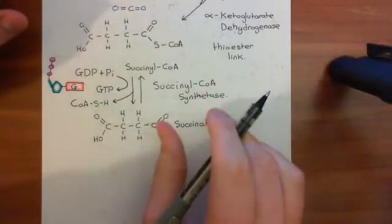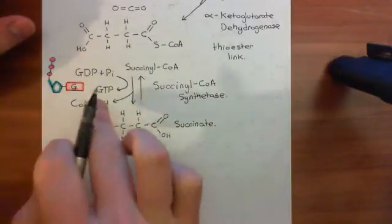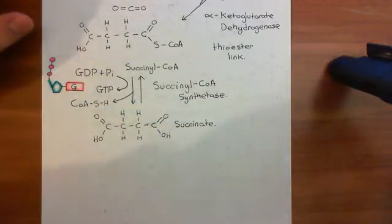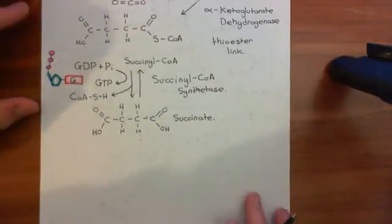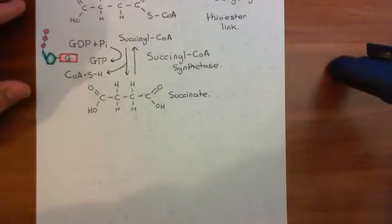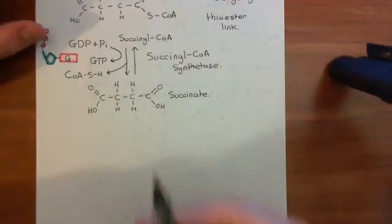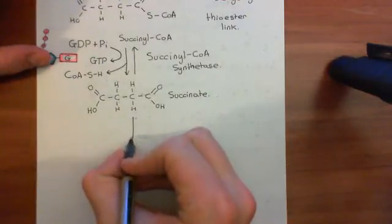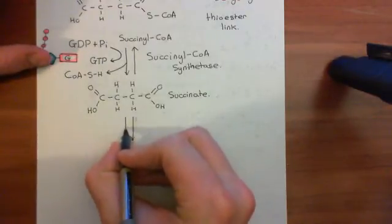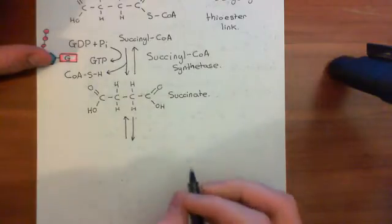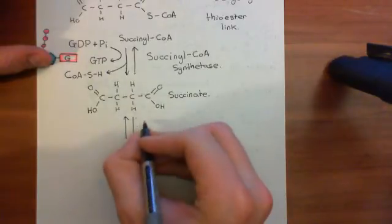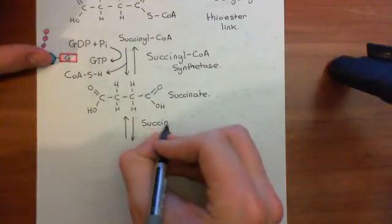This reaction is reversible, but it's producing an energy source — guanosine triphosphate is an energy source. You can use it similar to ATP. It's not as famous as ATP because it's not as widely used within the cell, but it is effectively a similar concept. The succinate is now going to go further — it's going to be turned into a molecule known as fumarate, and the enzyme that's going to do this is something called succinate dehydrogenase.